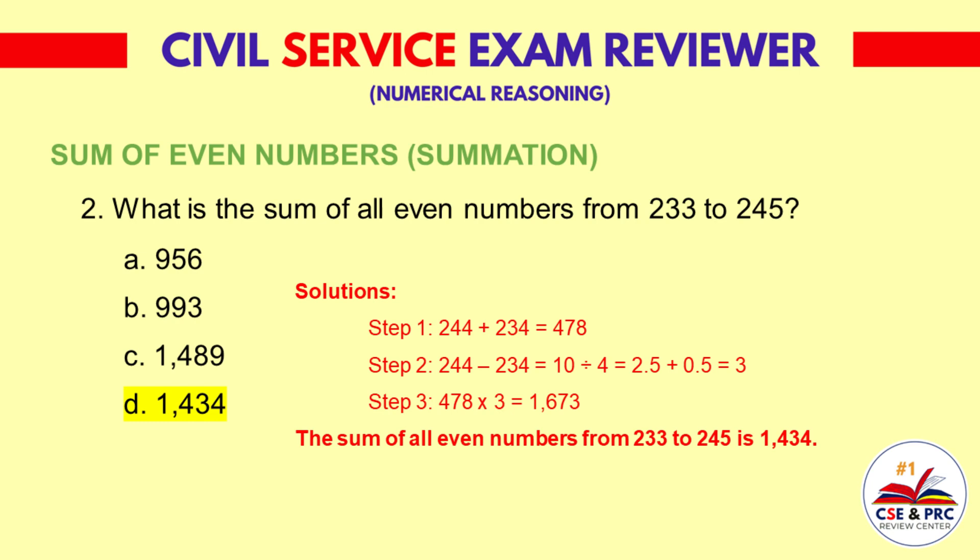Step 2: 244 minus 234 is equal to 10, divided by 4 is equal to 2.5, plus 0.5 is equal to 3. Step 3: 478 times 3 is equal to 1,434. The sum of all even numbers from 233 to 245 is 1,434.